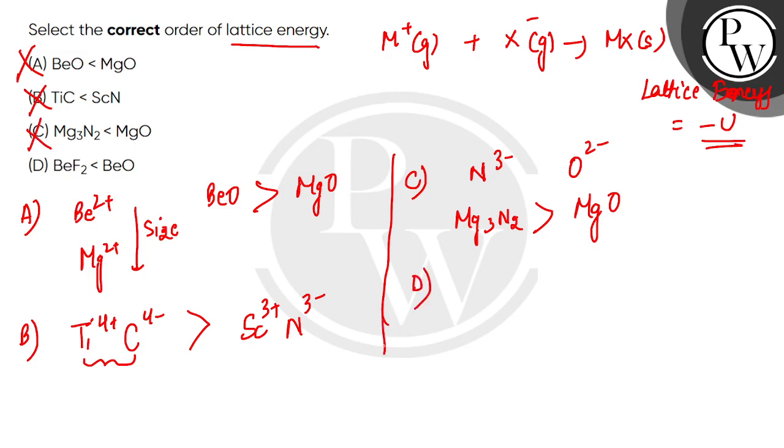Option D has BeF2 and BeO - beryllium fluoride and beryllium oxide. Beryllium is the same, so we compare the anions fluoride and oxide. As discussed, we look at the anion's charge and size to determine which lattice is stronger.